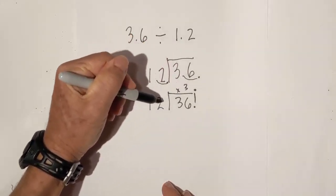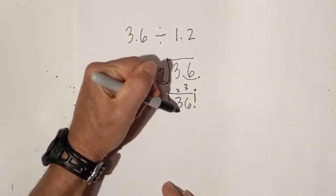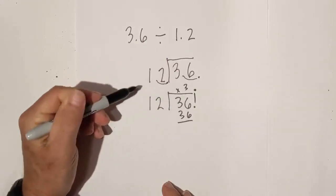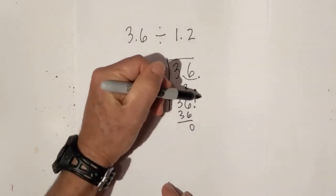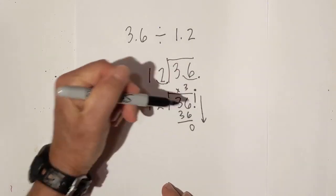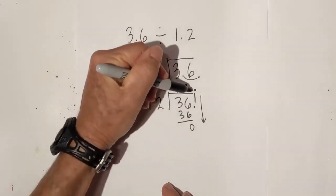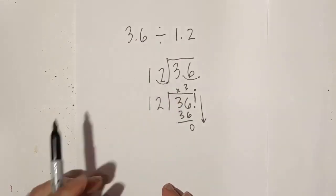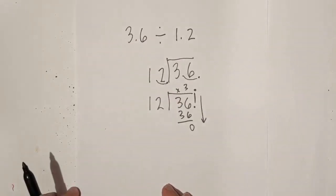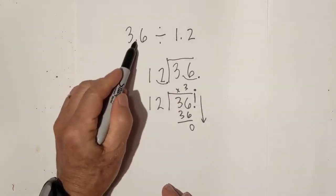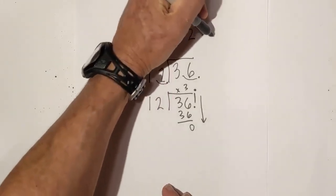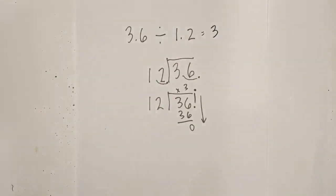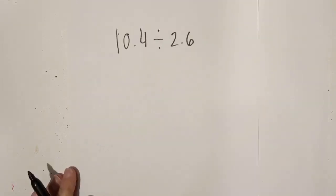3 times 12 is 36. Subtract — we get 0, and there is nothing to bring down. The decimal point is to the right, so 3 and 6 tenths divided by 1 and 2 tenths equals 3.